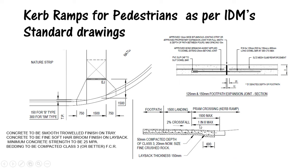The maximum crossfall shall not exceed 1.8 percent. A tactile surface indicator is required if the crossfall is about one in eight percent. It provides friction for pedestrians and support in wet conditions. Each council has different requirements in terms of dimensions; however, the maximum crossfall of 1.8 percent must be ensured.